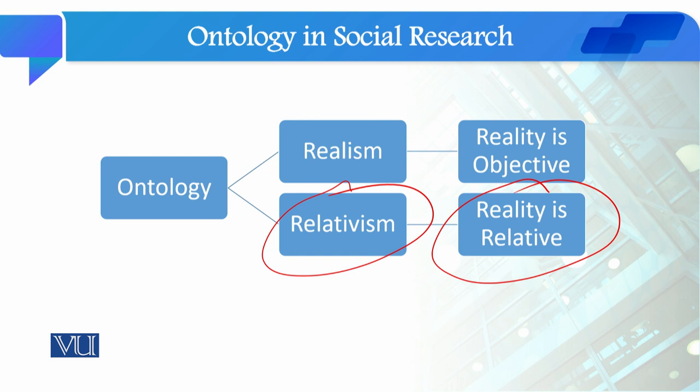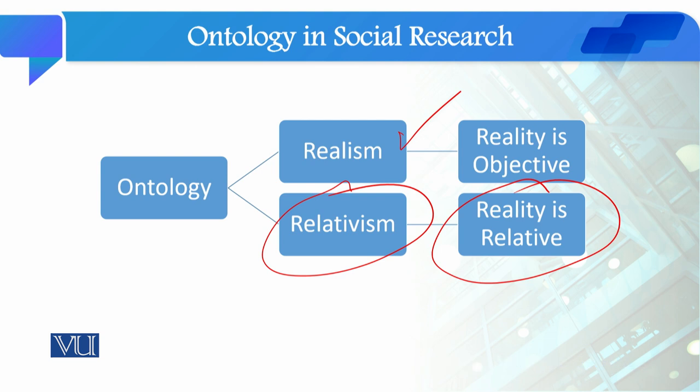These are the two major ontological beliefs in social sciences: realism and relativism. When we talk about quantitative research methodology, it is associated with the ontological belief of realism. This ontological belief connects to epistemological theories, which we will talk about in our next module.